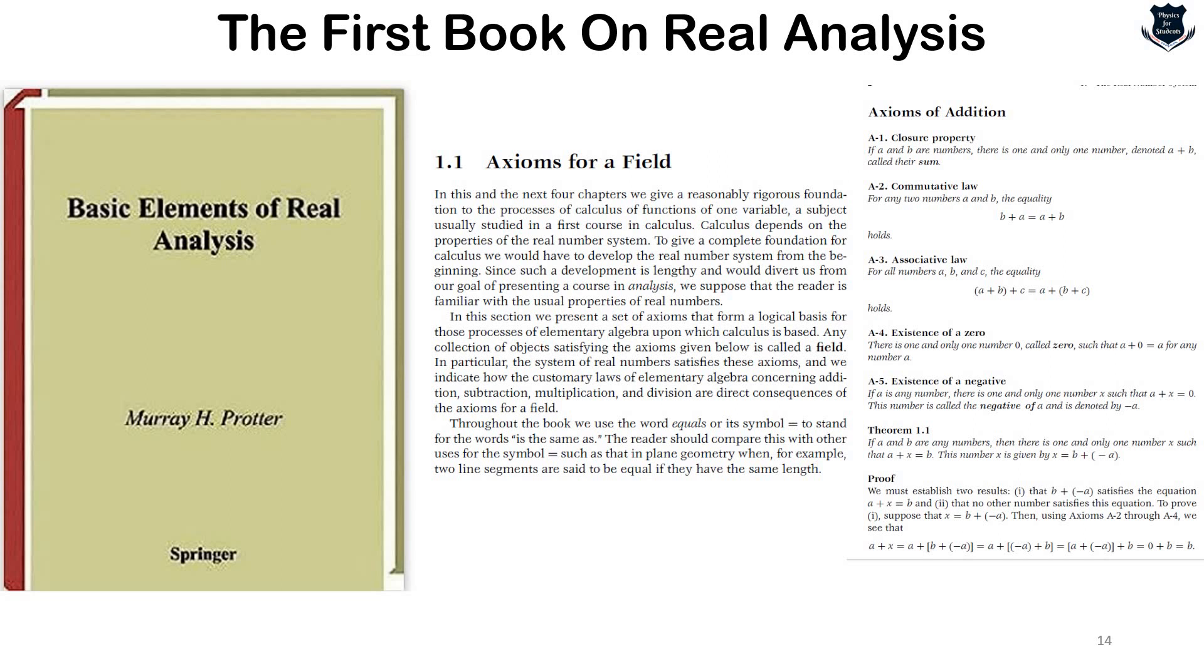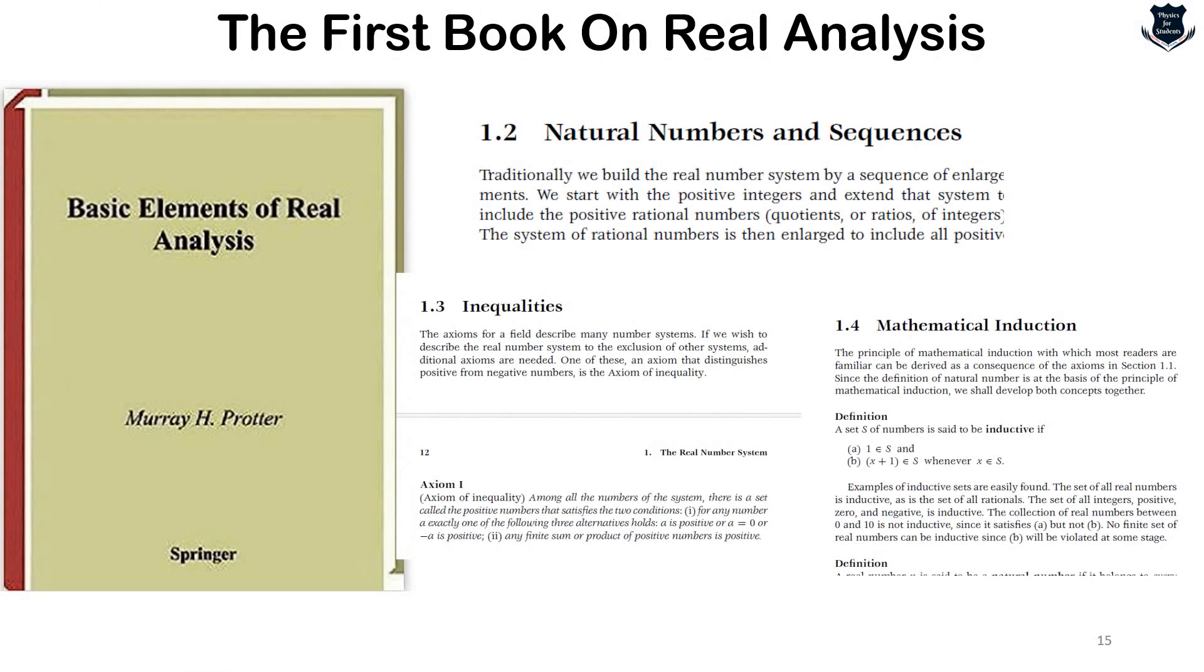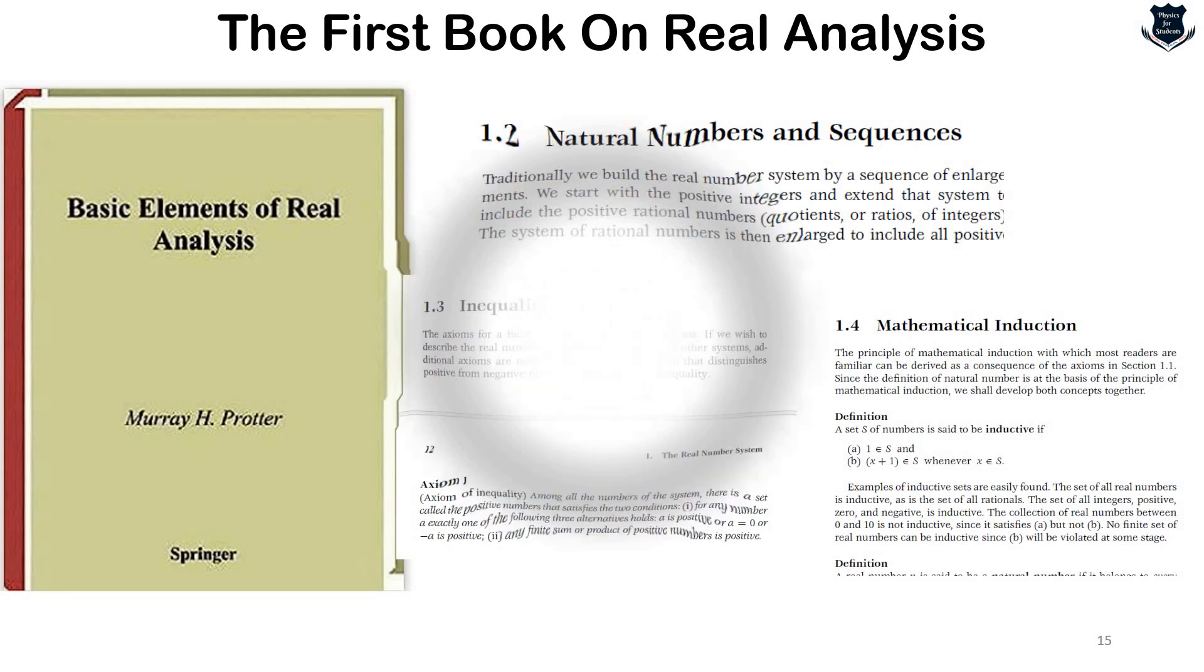You see that it starts basically with axioms for a field because this is central and it will first lay out the axioms of addition, commutative associative law. You might skip this one but this is also very important. So, it starts right from the beginning. Next, what Professor does is that he deals with national numbers and sequence. What are inequalities, right? Axiom 1 and what is mathematical induction. Different methods of induction are also laid out.